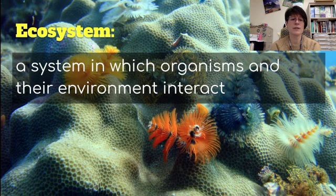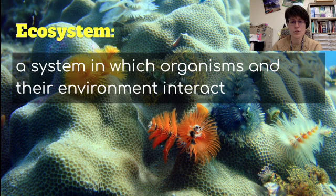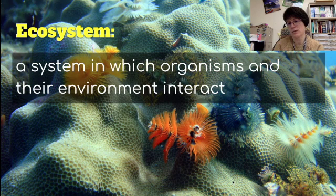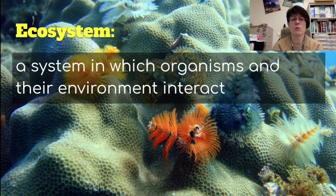We're going to be talking about ecosystems — a system in which organisms and their environment interact. We can see in the background a water ecosystem with Christmas tree worms, which are actually worms attached to coral, and there is an interaction there. Ecosystems can be very large and include the whole earth, or they can be very small, as small as a mud puddle or a log. When talking about ecosystems, we have to define which ecosystem we are referring to.